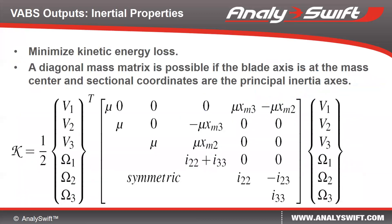As far as VIPS outputs are concerned, it can compute the inertial properties by minimizing the kinetic energy loss between the original 3D model and the one-dimensional beam model. The result will be a 6-by-6 mass matrix, which we can use to extract the mass per unit length, the mass moment of inertia, and the principal inertial axis.